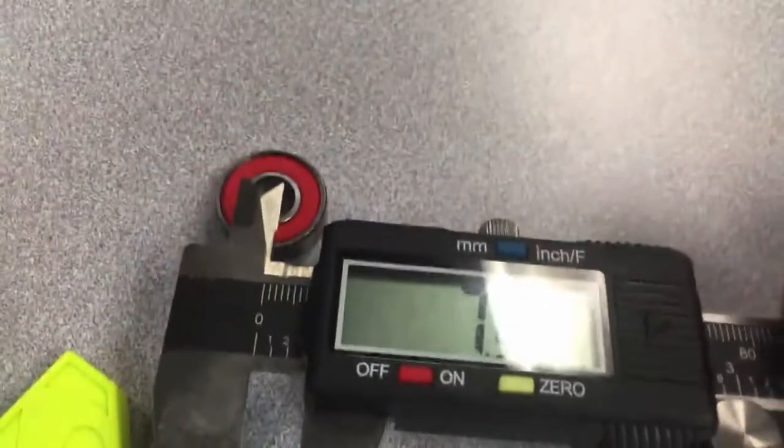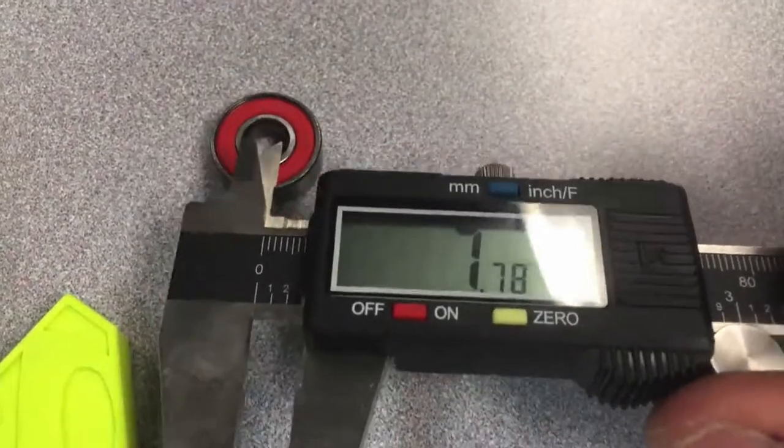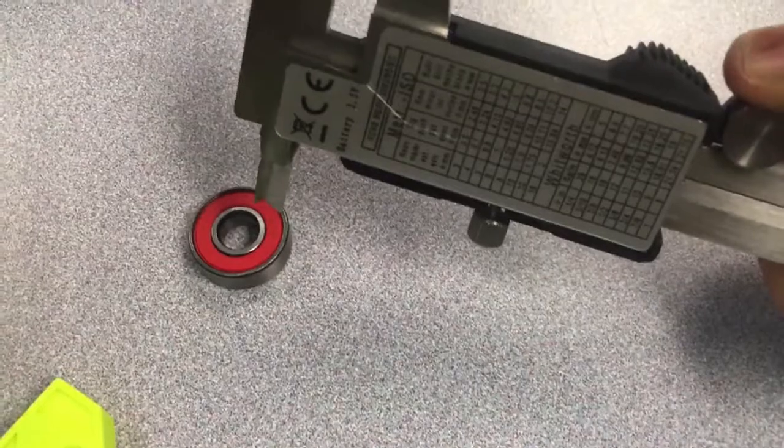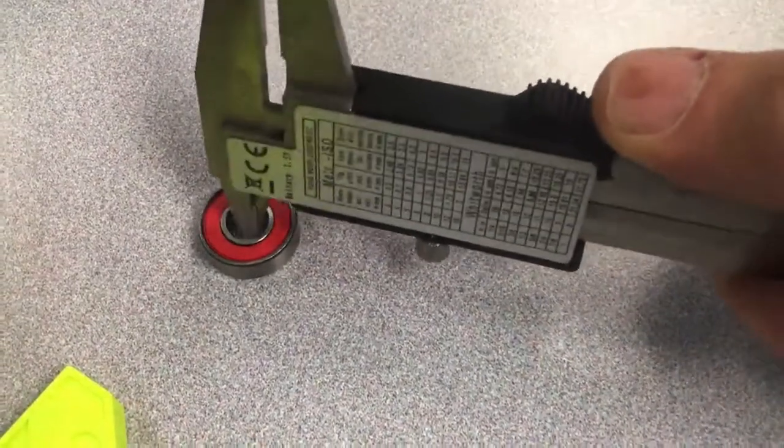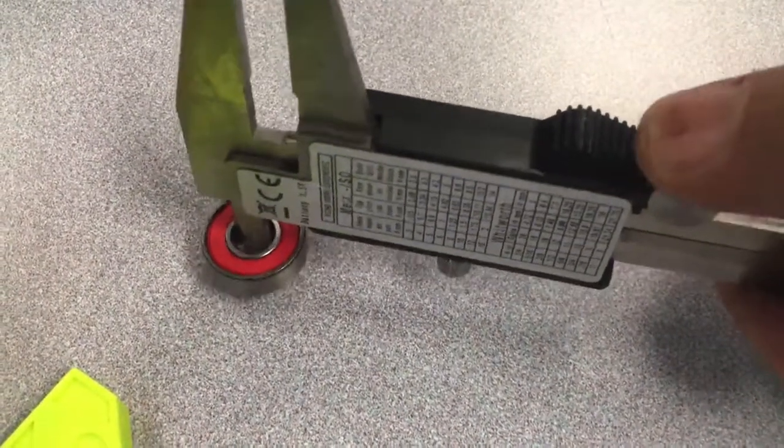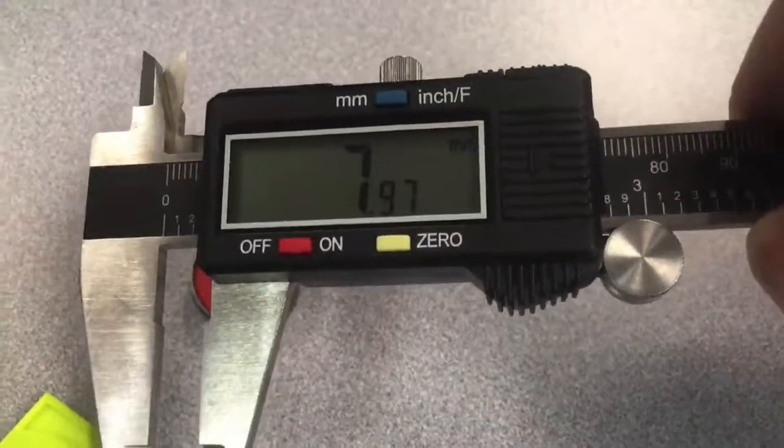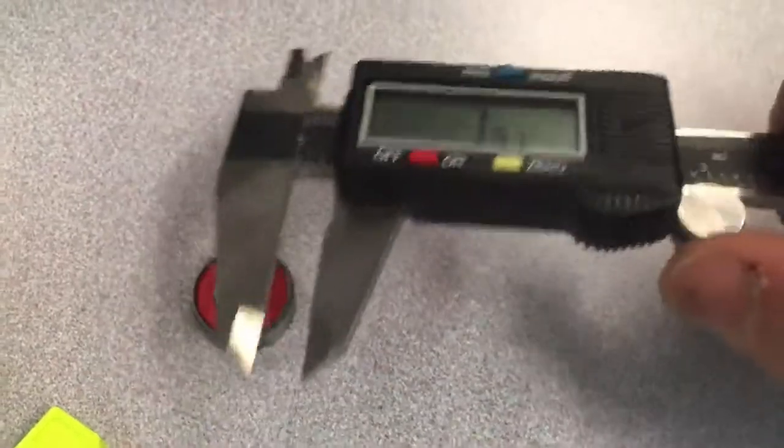One other handy function of this is to be able to measure the inside of a hole. With this side here, all I do is I put this inside like that. And it tells me seven point nine seven. Probably closer to eight millimeters.